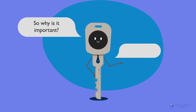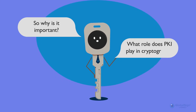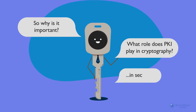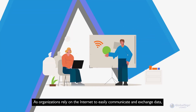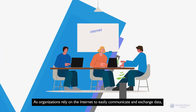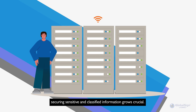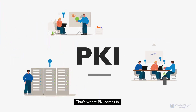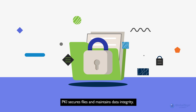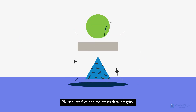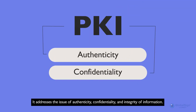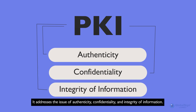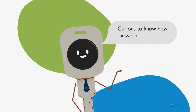So why is it important? What role does PKI play in cryptography and security? As organizations rely on the internet to easily communicate and exchange data, securing sensitive and classified information grows crucial. That's where PKI comes in — it secures files, maintains data integrity, and addresses the issues of authenticity, confidentiality, and integrity of information.